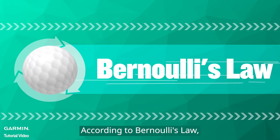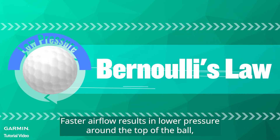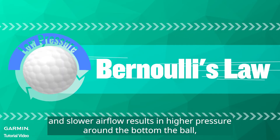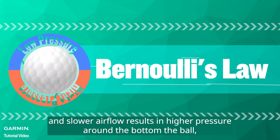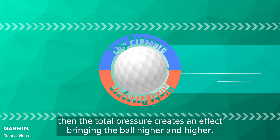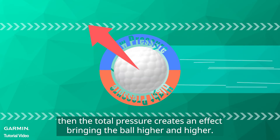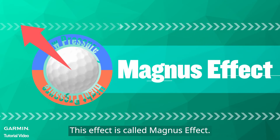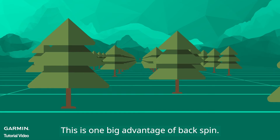According to Bernoulli's law, faster airflow results in lower pressure around the top of the ball, and slower airflow results in higher pressure around the bottom of the ball. The total pressure creates an effect bringing the ball higher and higher. This effect is called the Magnus effect, and this is one big advantage of backspin.